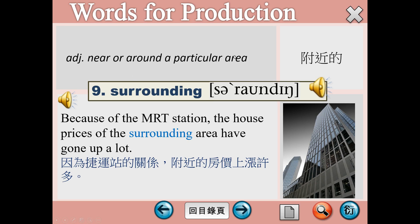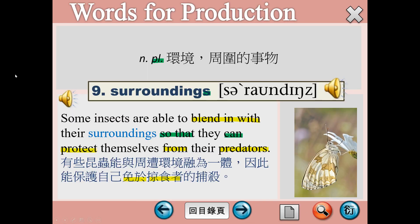Next one，number 9，surrounding，附近的，跟nearby的意思是一樣的。Because of the MRT station, the house prices of the surrounding area have gone up a lot. Surrounding這個字事實上是從動詞加ing變形容詞而來。Because of因為，因為捷運的關係，捷運所到之處，房價地價都會上漲。Surroundings用動名詞的形態當名詞，字尾再加上S，這個字通常用複數型。